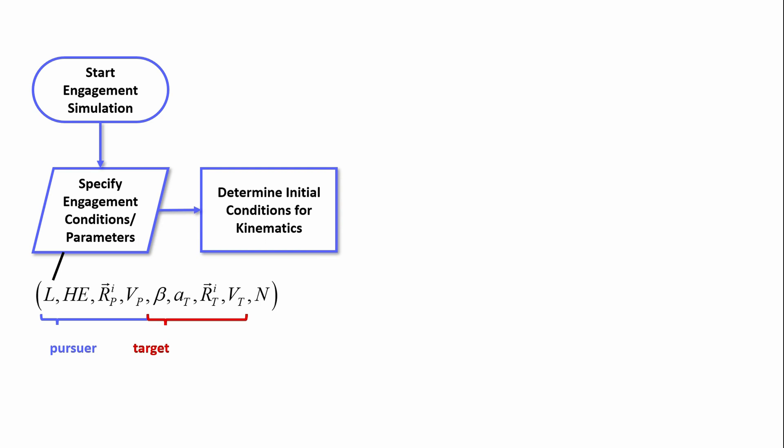This input is used to determine the initial conditions to integrate the kinematics. We essentially have inertial positions, inertial velocities, and then the target heading angle beta.